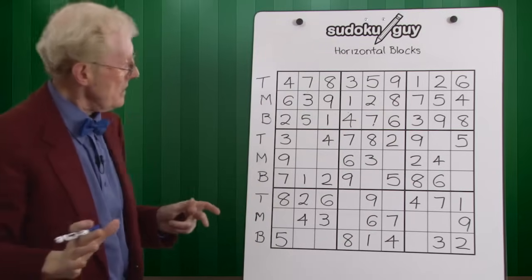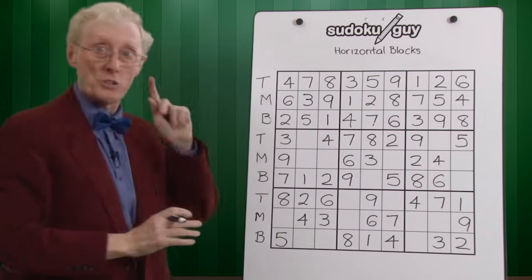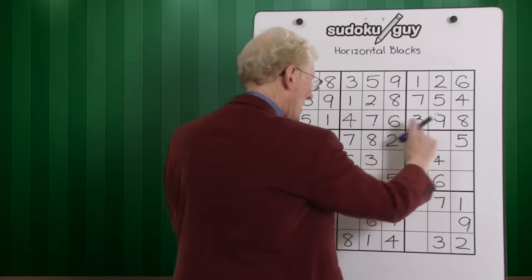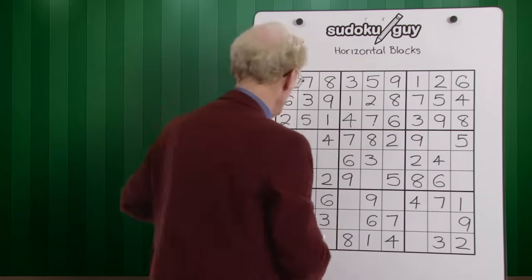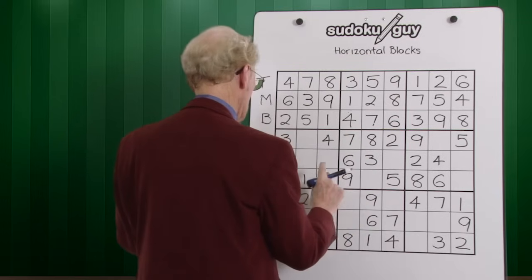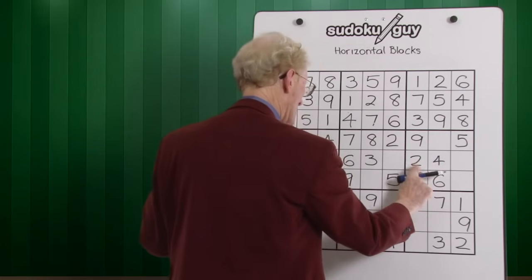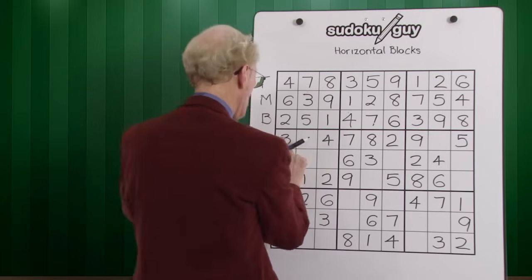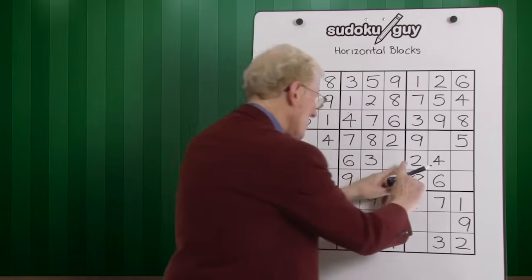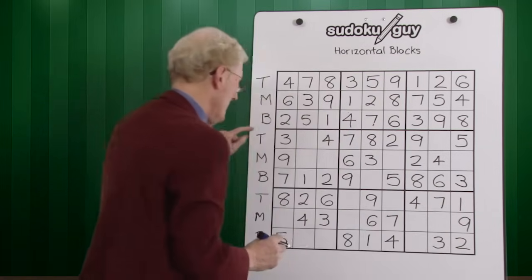Now let's move to the second set of three blocks. Starting with ones — there's not a one here and not a one there, so we skip ones for now. For twos: we have a bottom in one block and a top in another, so it has to be in the middle of the third block. For threes: there's a three on top in one block and a three in the middle of another. We can work out that this becomes our three — we need top, middle, and bottom.